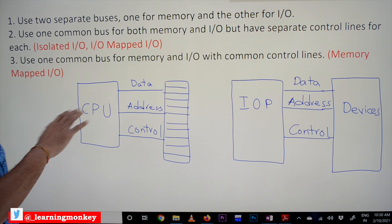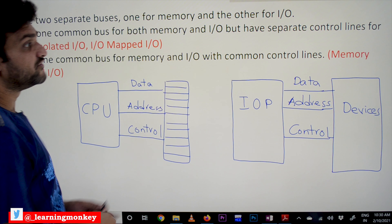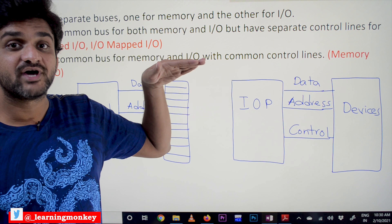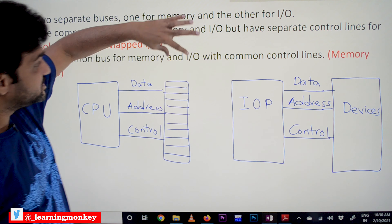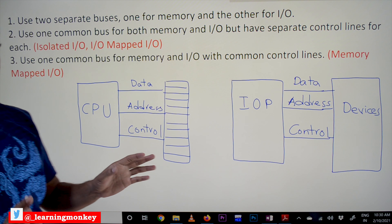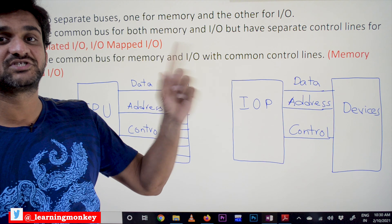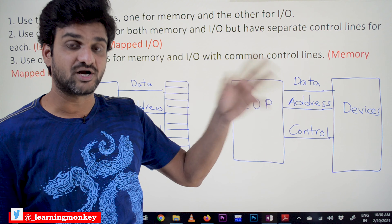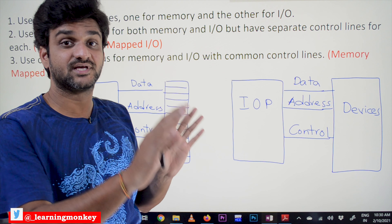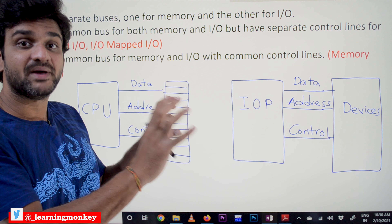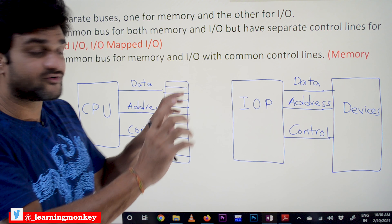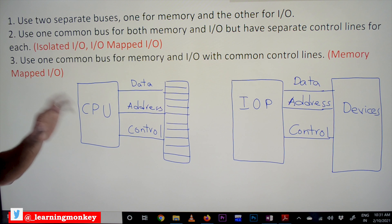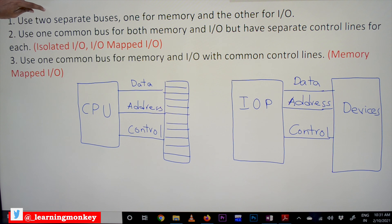The third type is also to use one common bus for both memory and IO, but with common control lines. Unlike the second method which has separate control lines, in this third method all lines are common — one common bus consisting of a data line, address line, and a common control line, all shared by both IO devices and the memory device. This kind of organization is what we call memory-mapped IO.